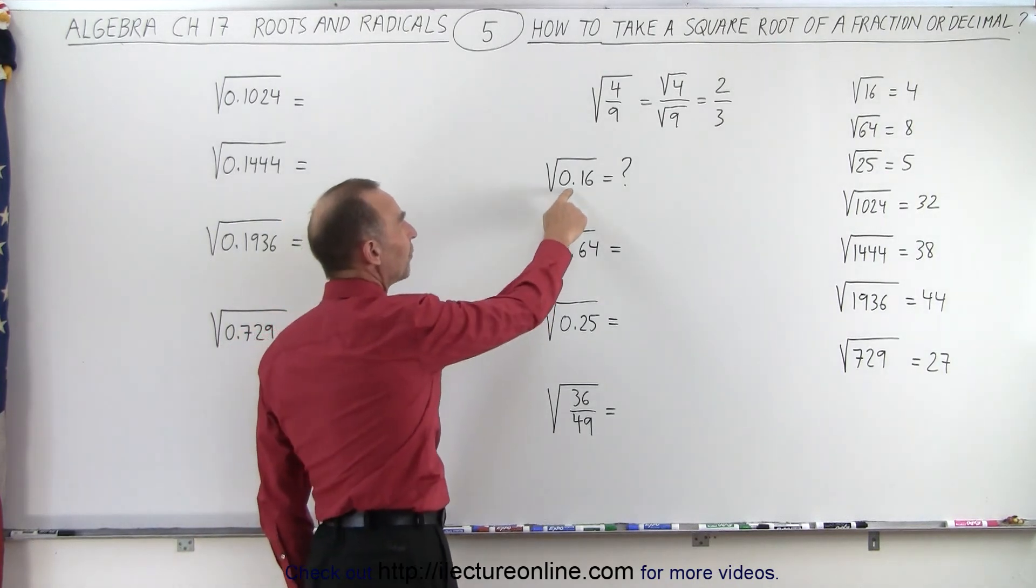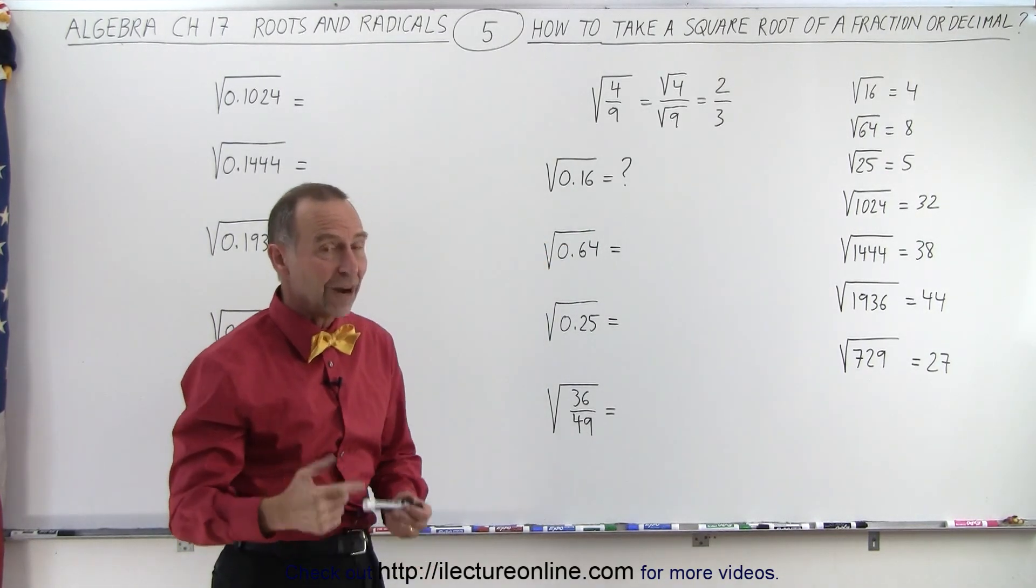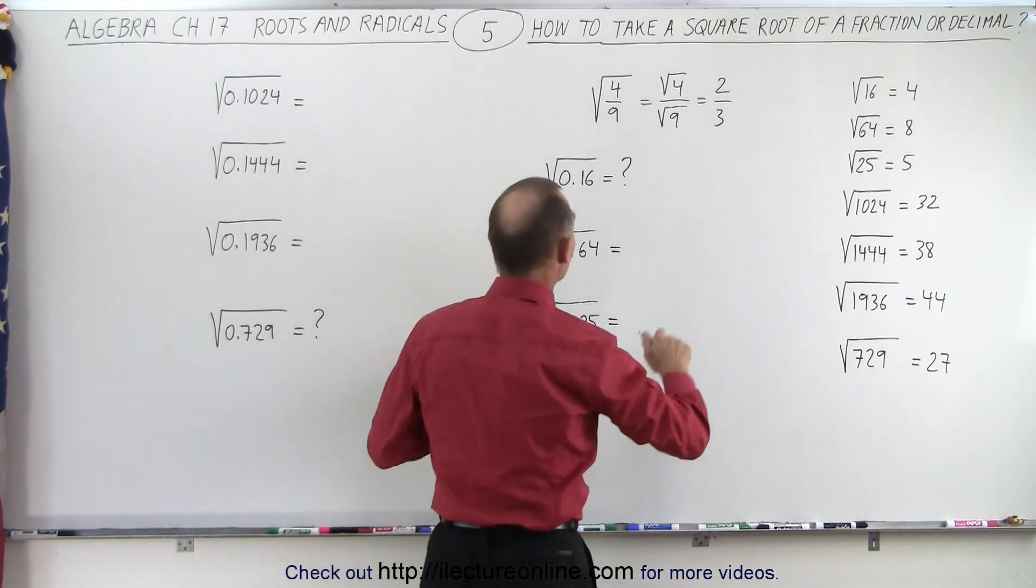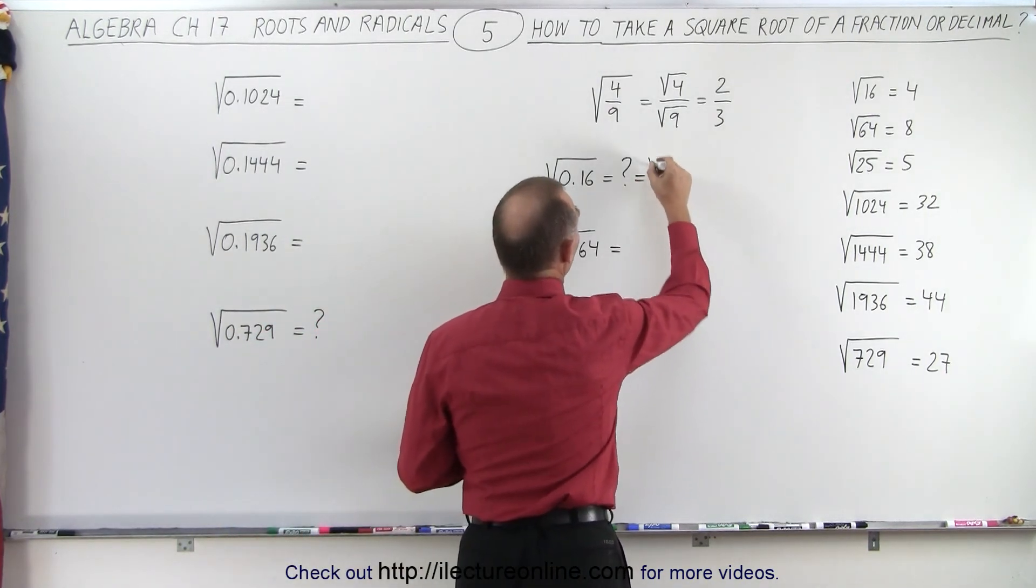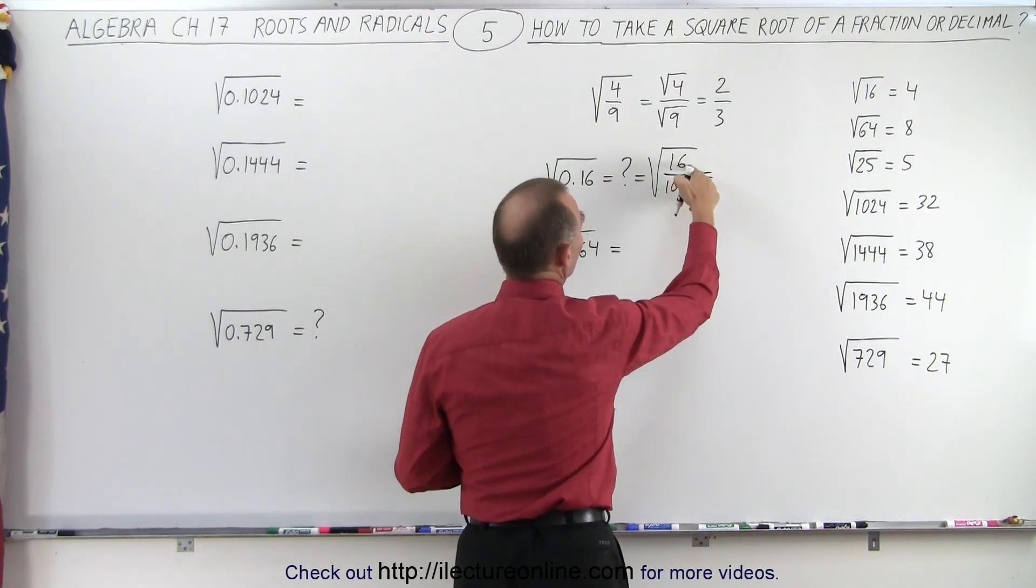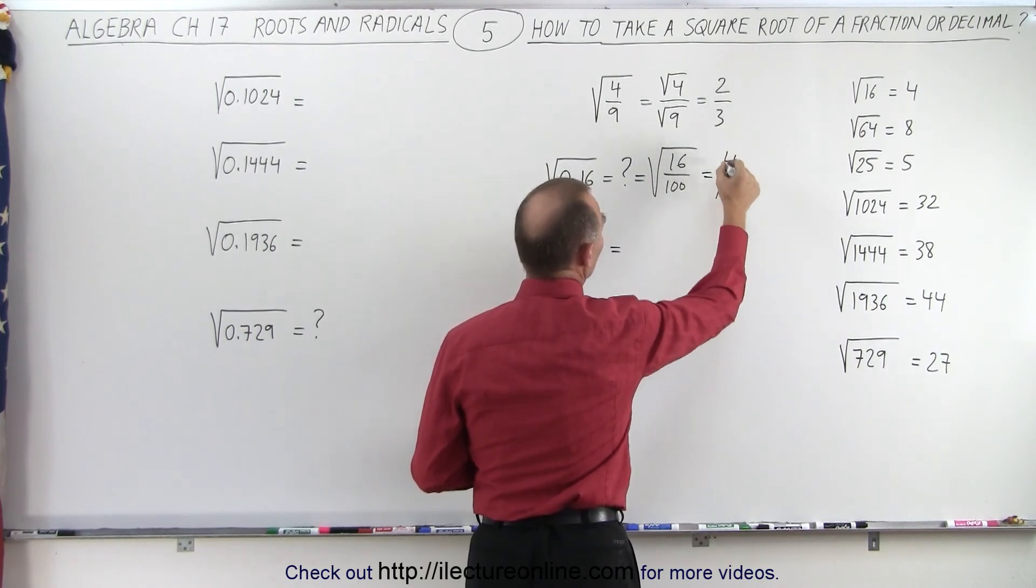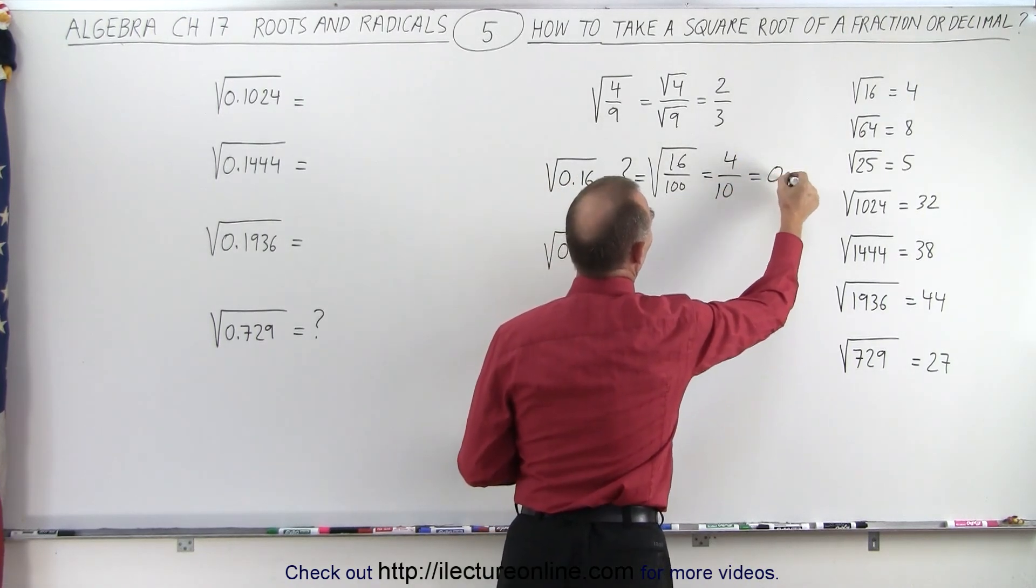But then how do you take the square root of a decimal? Well, it turns out we could turn it into a fraction. For example, 0.16, well that can be written as the square root of 16 divided by 100. And then of course, the square root of 16 is equal to 4 and the square root of 100 is equal to 10, which is 4 divided by 10, which is 0.4.